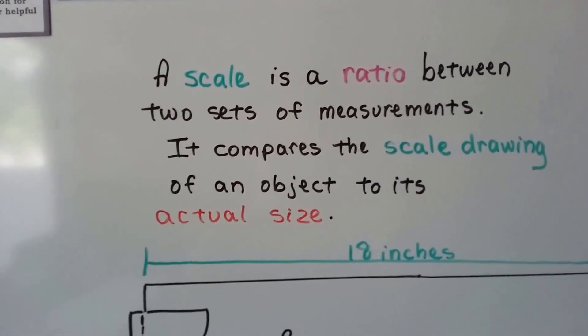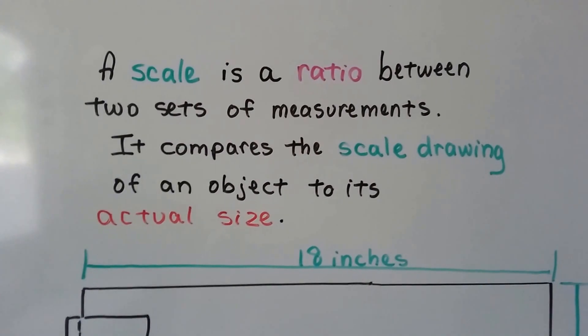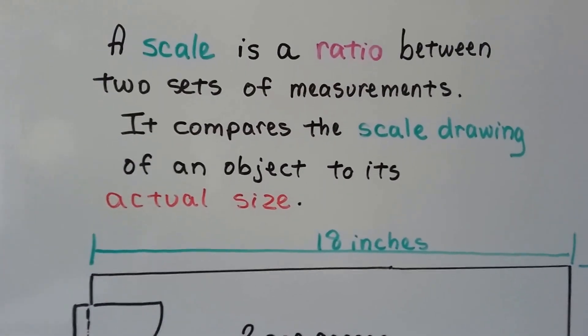A scale is a ratio between two sets of measurements, and it compares the scale drawing of an object to its actual size.